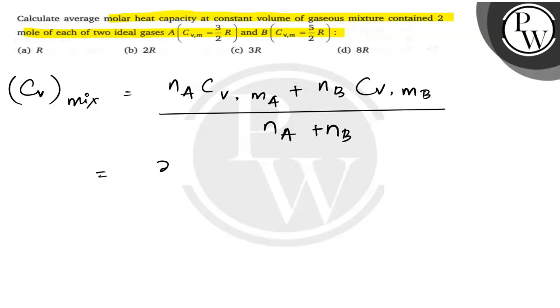So, it will be 2 into 3 upon 2 plus 2 into 5 upon 2, divided by 2 plus 2, which is equal to 4.